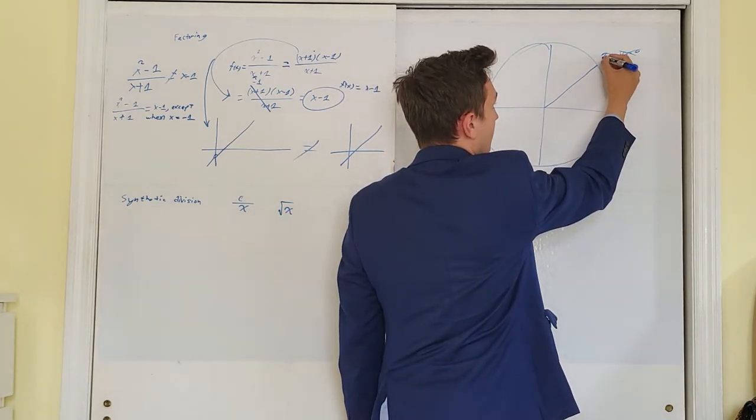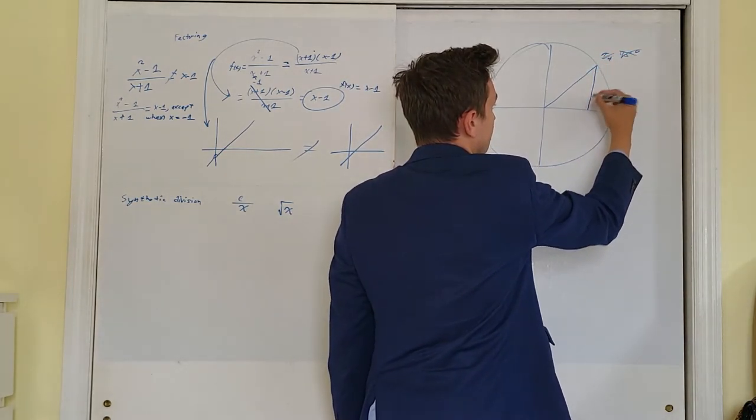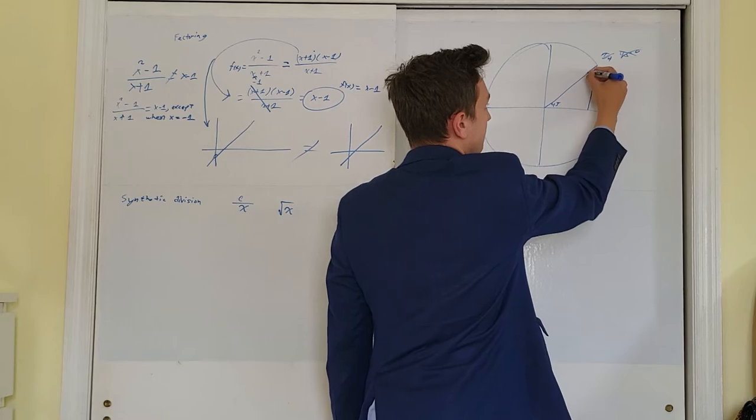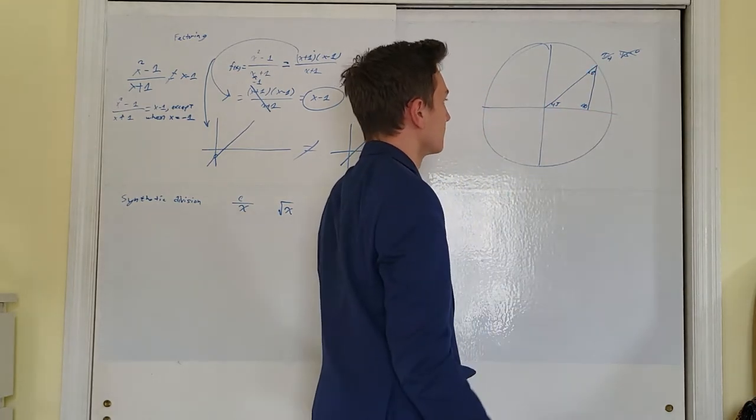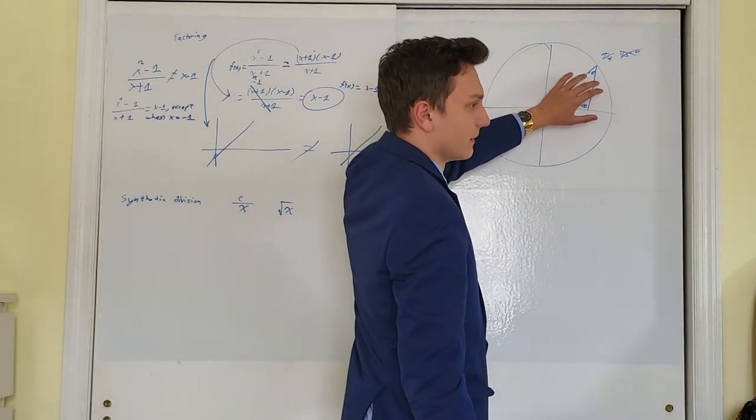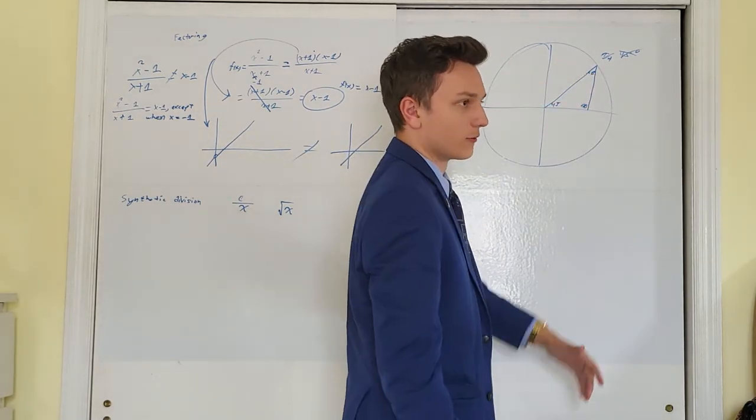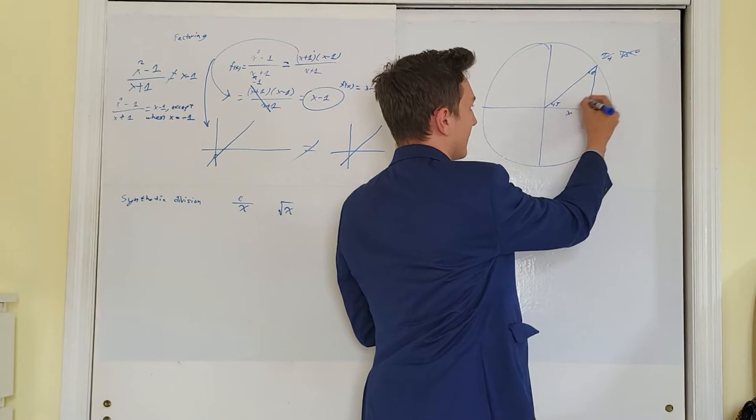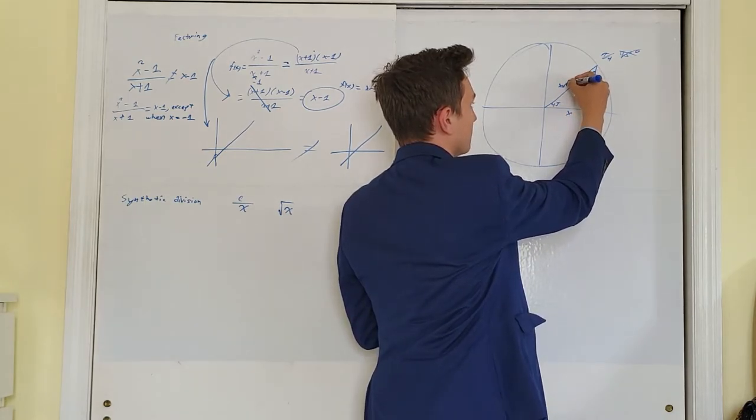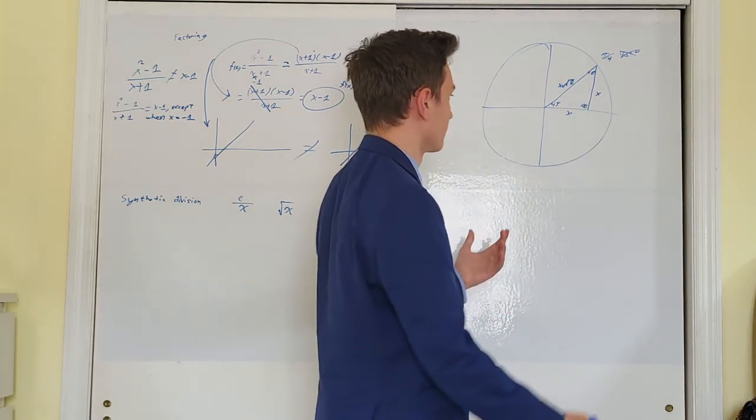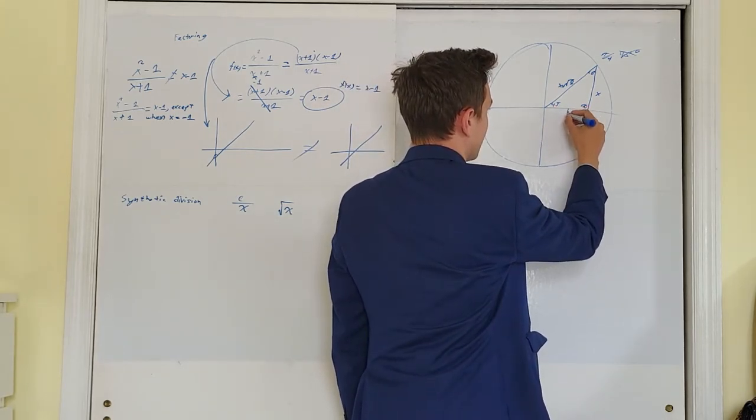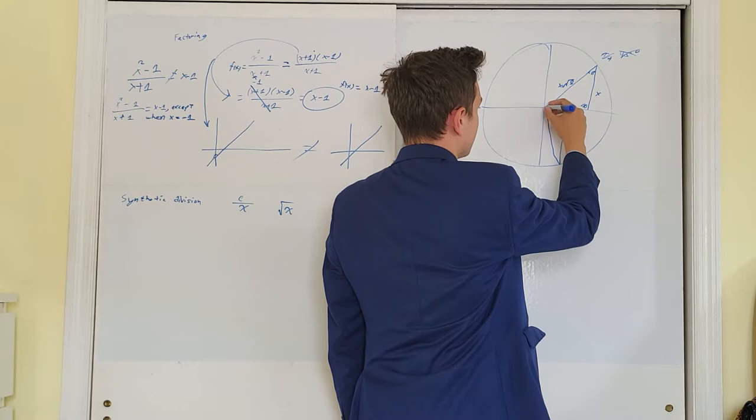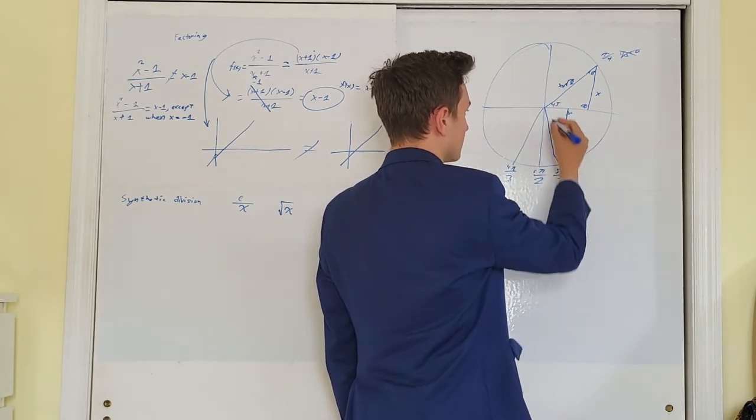So at pi over four radians, we've got 45, 45, 90 triangle. And we can help, that can help us remember our formulas for the x, x, x rad 2 sides of a 45, 45, 90 triangle. Same thing with the 30, 60, 90s.